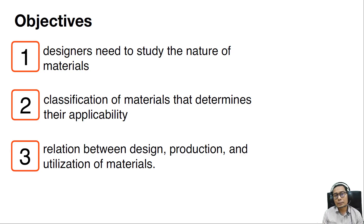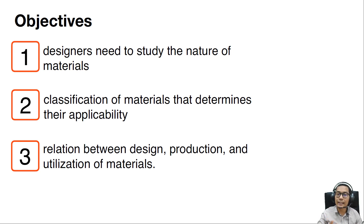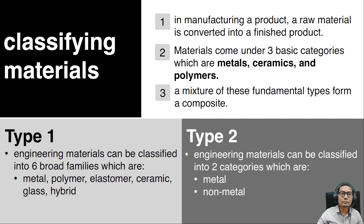The objectives of selecting materials and processes: first, designers need to study the nature of the materials itself, and then look into the classifications of materials that determine their applicability, and also the relations between the design, production, and utilization of the materials.